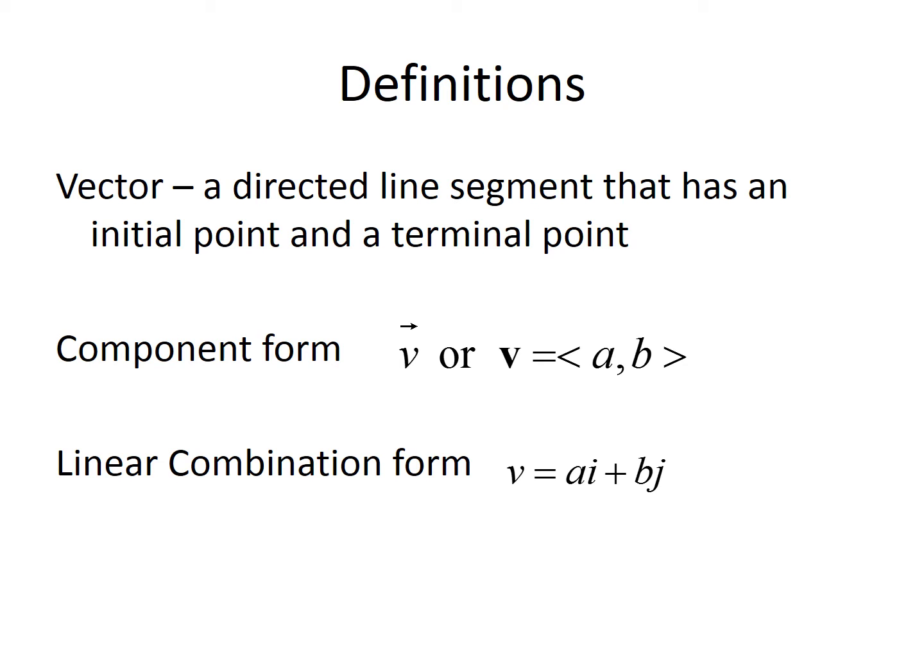A vector is a directed line segment. We can write that vector in different forms. Component form can be written as a bold V, or sometimes with a line segment above it. Most of the time we write it in component form as less than A comma B greater than.